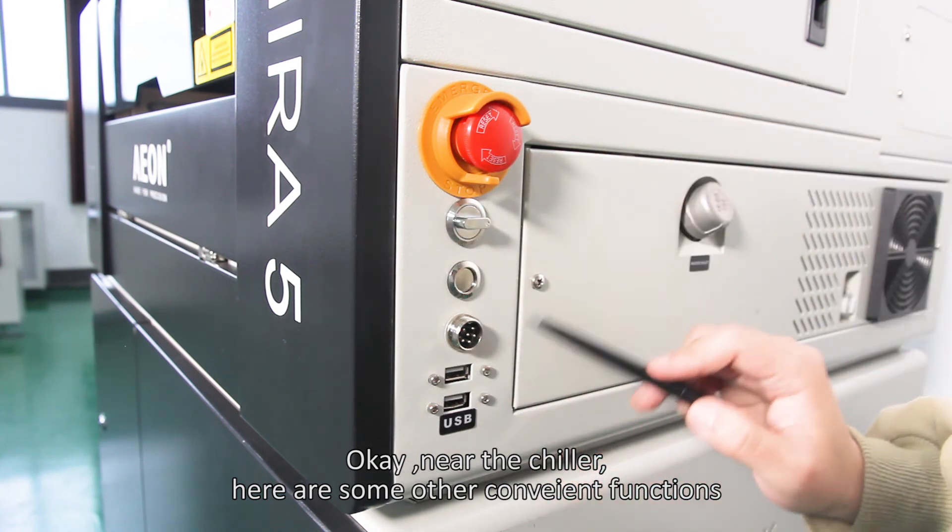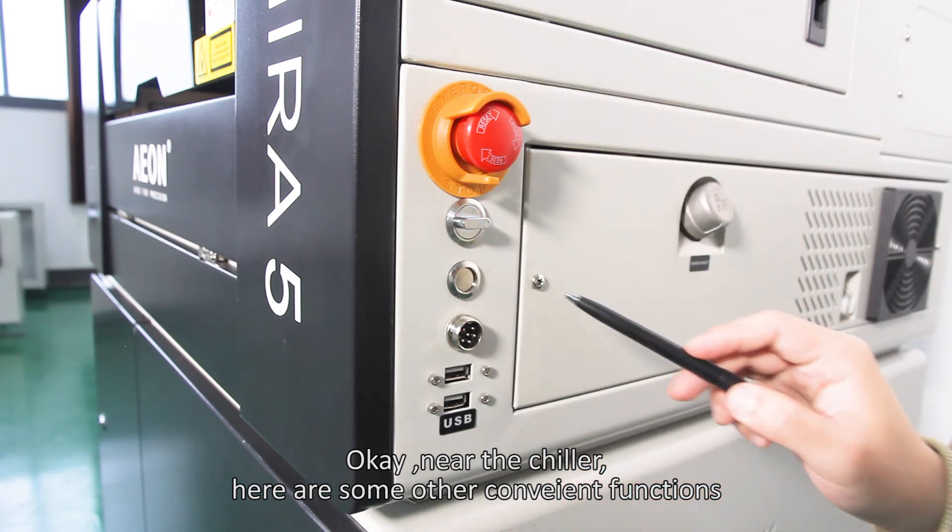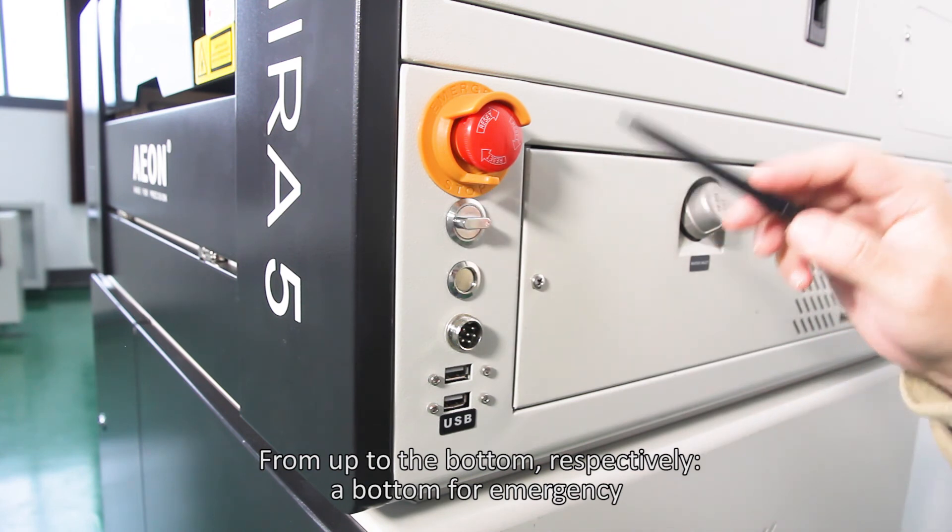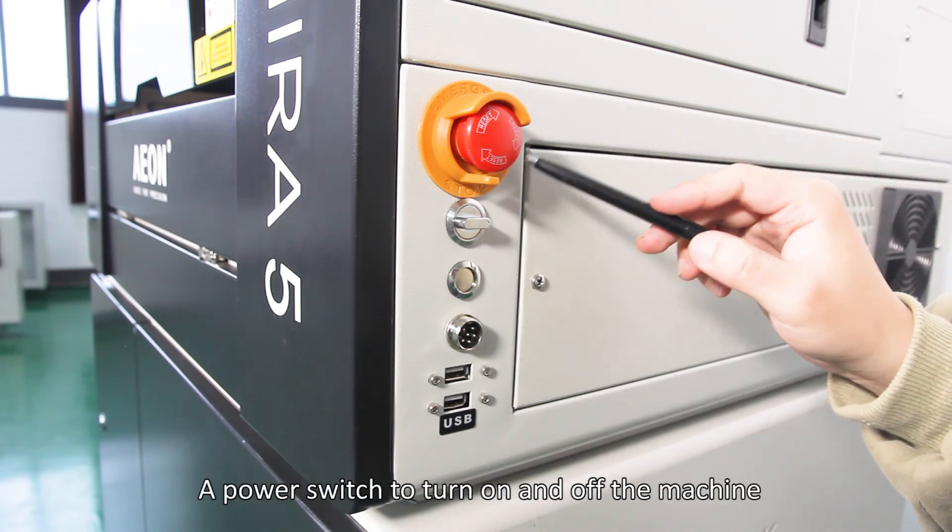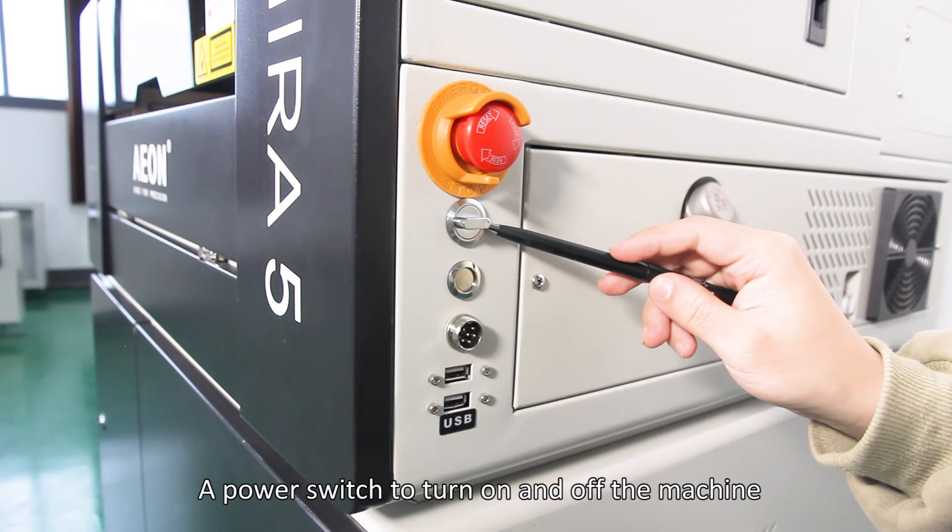Near the chiller, here are some other convenient functions. From top to bottom, respectively: a button for emergency stop, and a power switch to turn the machine on and off.